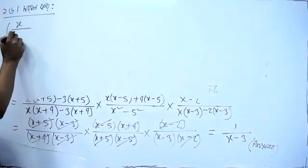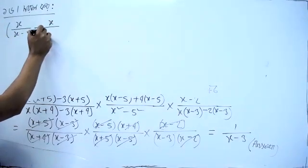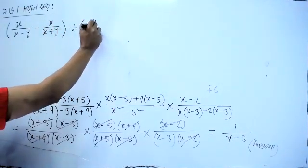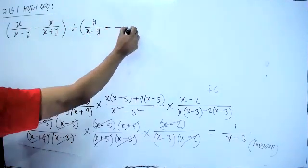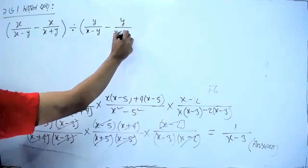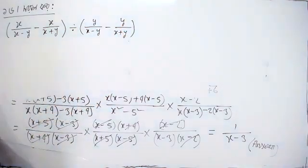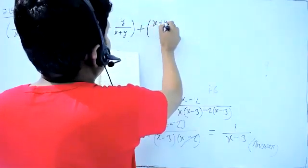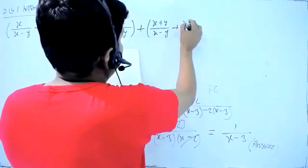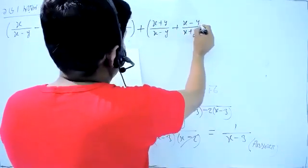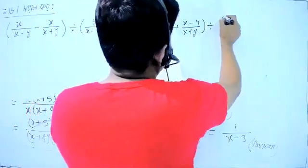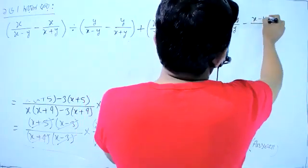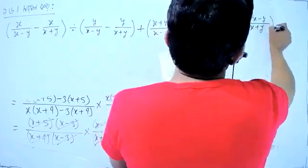x/y · (x - y) - x/y · (x + y), y by (x - y) - y · y by (x + y), plus (x + y) by (x - y) + (x - y) by (x + y), by (x + y) by (x - y) - (x - y) by (x + y).